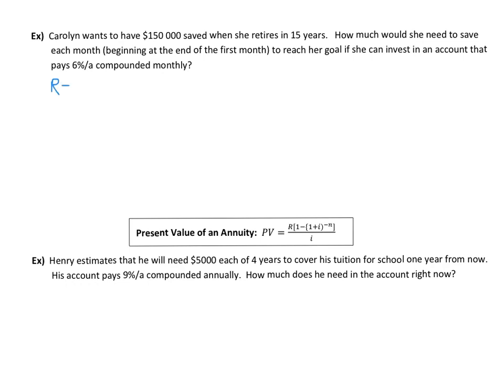How much would she need to save each month? That's what we're trying to figure out here. And we have the future value. We want to have $150,000 at the end of the time frame. The I value, the interest rate is 0.06 per year and it's compounding monthly. So we have to divide that into 12 equal parts, which will be 0.005.